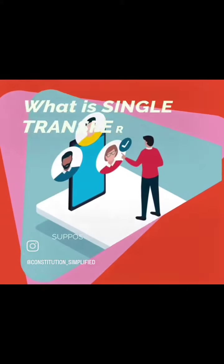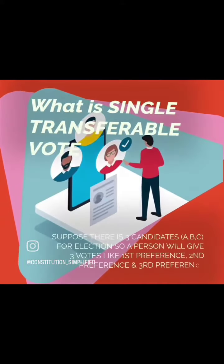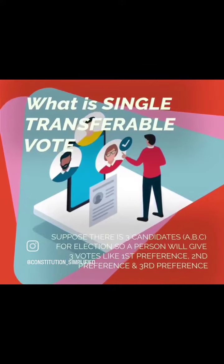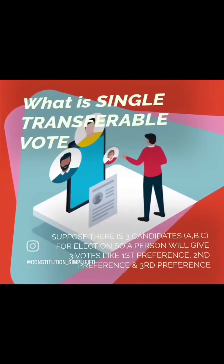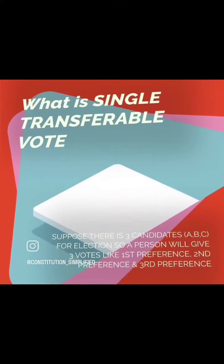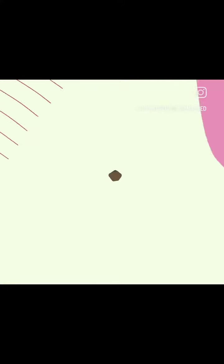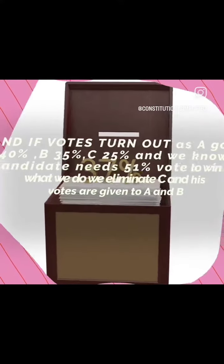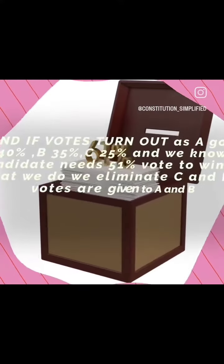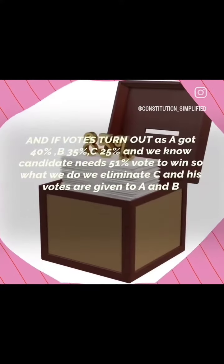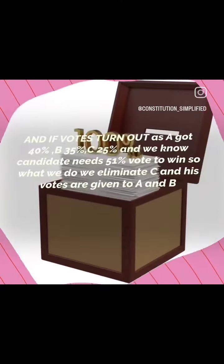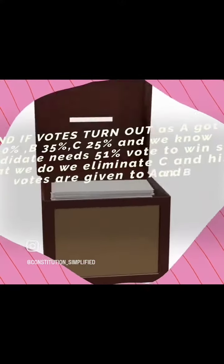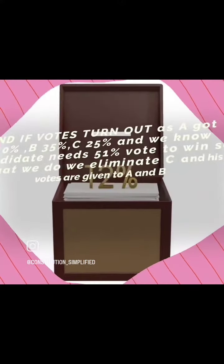Suppose there are three candidates for election, so a person gives three votes: first preference A, second preference B. If votes turn out as A got 40%, B 35%, C 25%, and we know a candidate needs 51% to win, we eliminate C and his votes are redistributed to A and B.